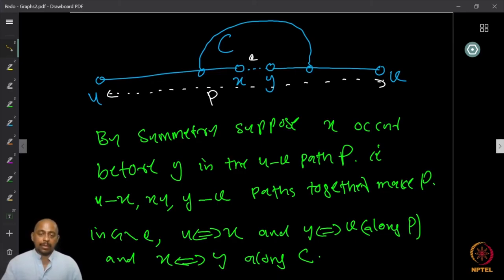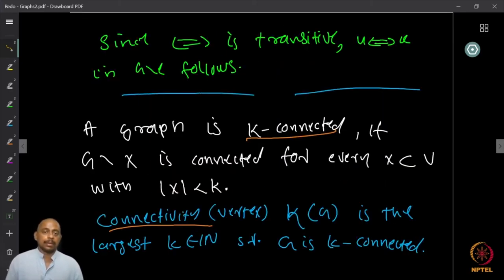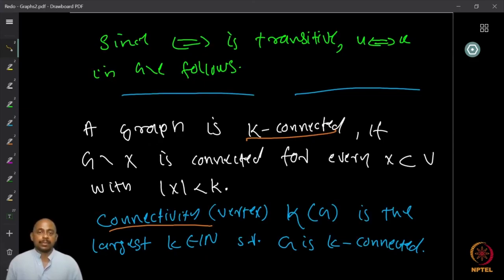Therefore there is reachability between U and V, so G minus E is also connected. This completes the proof of the theorem.